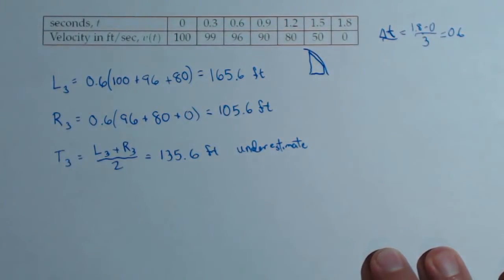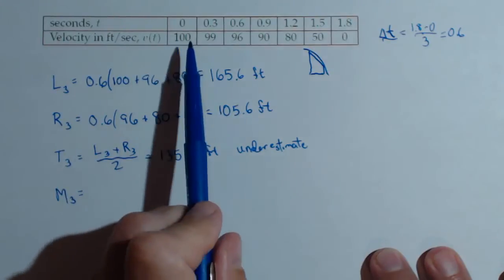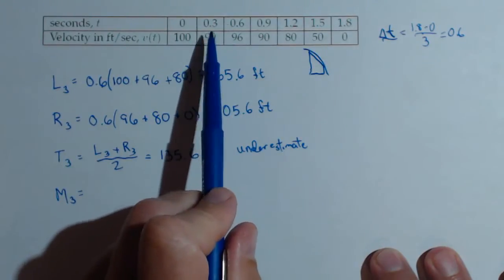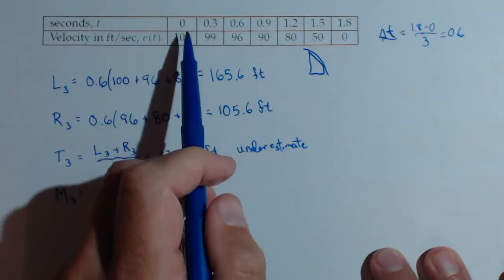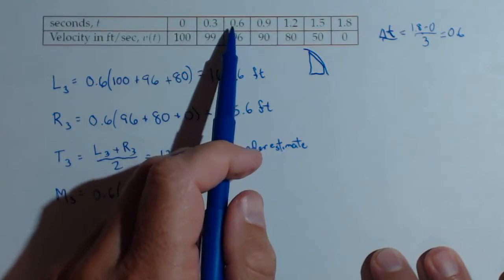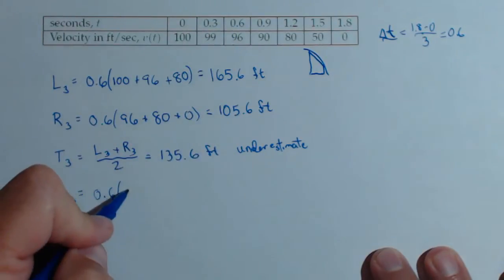Well, then let's get an overestimate using the midpoint rule with three rectangles. So our midpoint rule, again, we're not going to use all the data. We're going to use the in-between points. We still have the same delta t, so 0.6. For our interval 0 to 0.6, the midpoint we are given is 99.